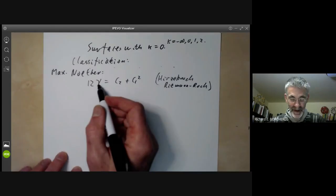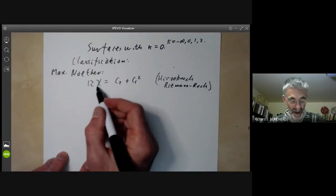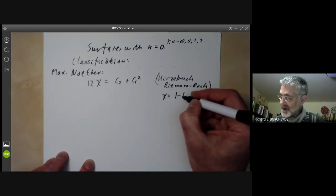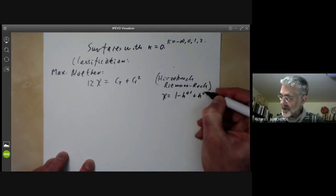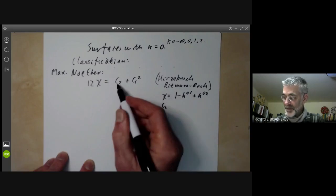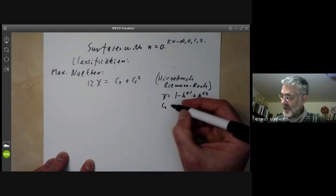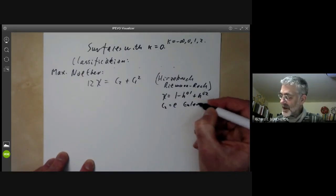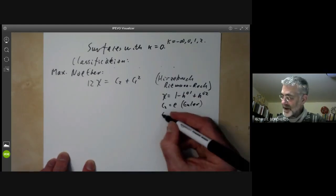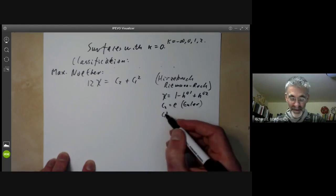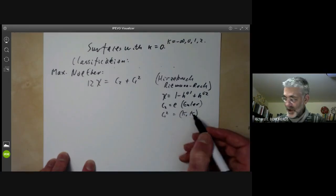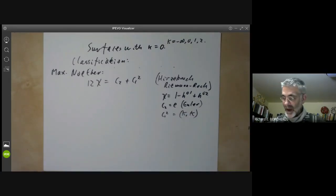Just to remind what these things are: χ is the holomorphic Euler characteristic, so χ equals 1 minus H⁰¹ plus H⁰², where these are the Hodge numbers I discussed in the previous lecture. C₂ is the second Chern number, which is equal to the Euler class or topological Euler characteristic of the surface. And C₁ squared is another Chern number, equal to the intersection number of the canonical bundle with itself.